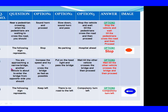Question 3: You are approaching a narrow bridge. If another vehicle is about to enter the bridge from the opposite side, you should. Option 1: Increase the speed and try to cross the bridge as fast as possible. Option 2: Put on the headlight and pass the bridge. Option 3: Wait till the other vehicle crosses the bridge and then proceed. The right answer is Option 3. Question 4: The following sign represents. Option 1: Keep left. Option 2: There is no road to the left. Option 3: Compulsory turn left. The right answer is Option 3: Compulsory turn left.